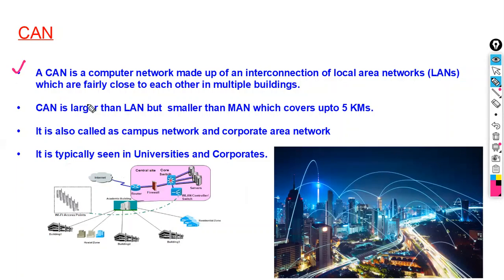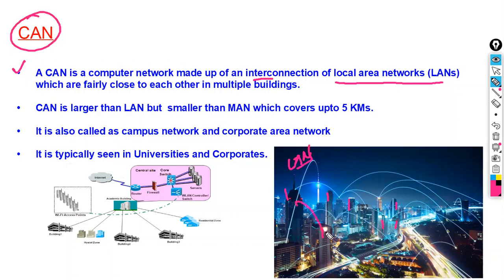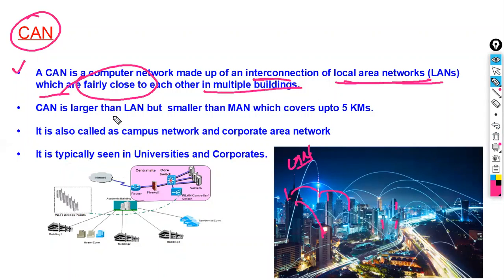We have one more network which is called CAN. CAN is a computer network made up of an interconnection of local area networks which are fairly close to each other in multiple buildings. In universities you will see multiple buildings fairly close to each other, each building having a LAN, and CAN connects all these LANs. CAN is larger than LAN but smaller than MAN, covering an area up to 5 kilometers. It is also called a campus network or corporate area network.